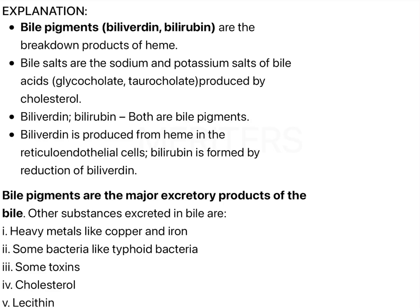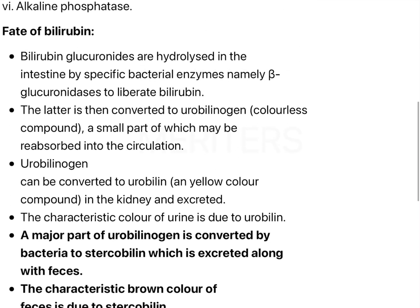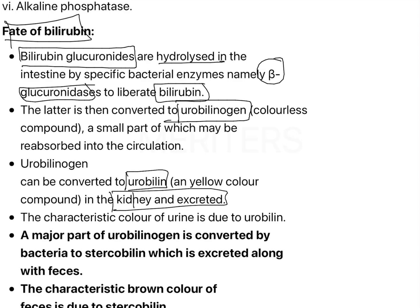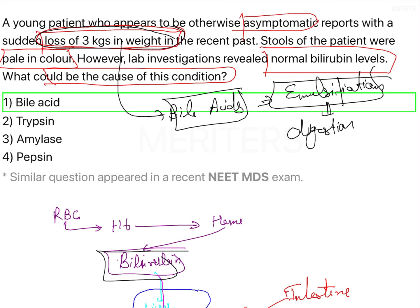To summarize the key concepts: bile pigments — bilirubin and biliverdin — are breakdown products of heme. Bile salts are bile acids that have formed salts like glycocholate and taurocholate, produced from cholesterol. Bilirubin glucuronide is hydrolyzed in the intestine by the bacterial enzyme beta-glucuronidase to liberate bilirubin, which is converted to urobilinogen. Urobilinogen is converted to urobilin in the kidney and excreted. A major part of urobilinogen is converted by bacteria to stercobilin, which is excreted through the feces and gives feces their characteristic brown color.